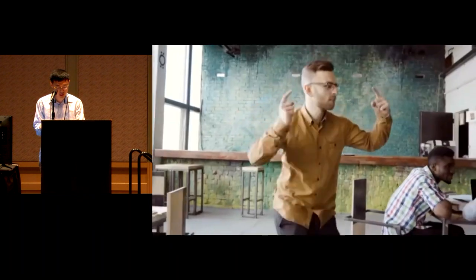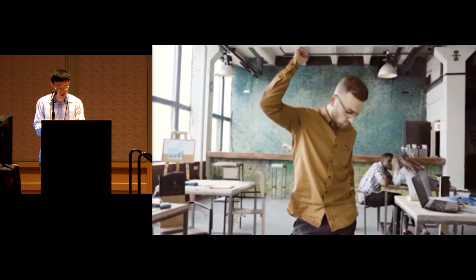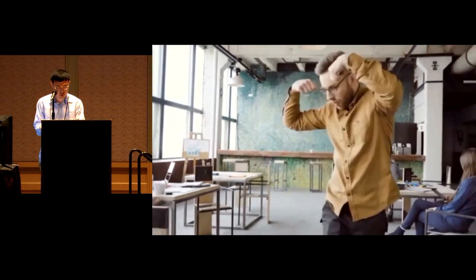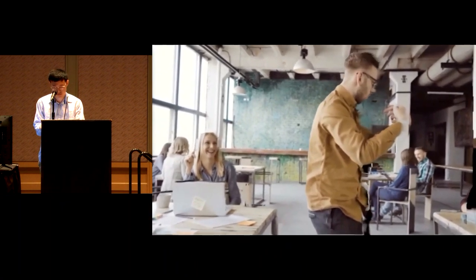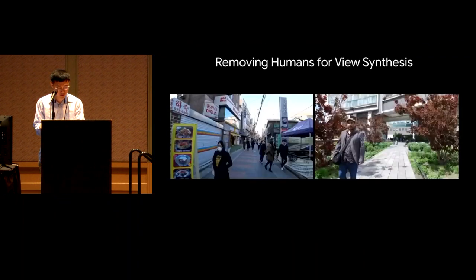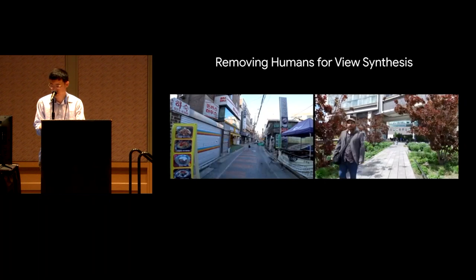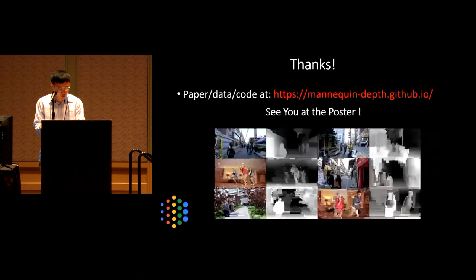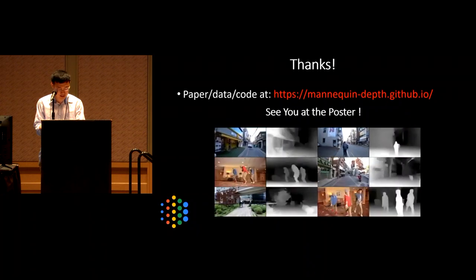We can also use our depth prediction to synthesize novel views of scenes, using nearby frames to fill in occlusions. When the camera and people are freely moving, most human regions can be effectively inpainted using our depth prediction. We have released the code and dataset on our website. Please come to poster 116.